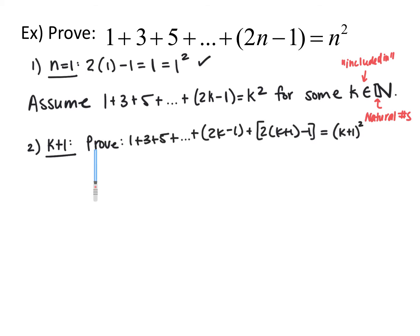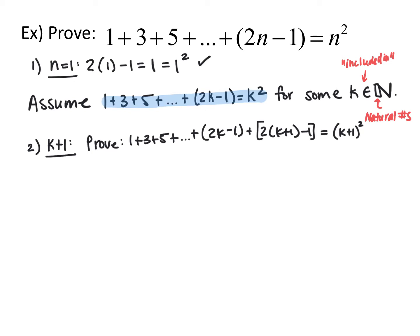We're going to prove that 1 plus 3 plus 5 plus so on plus 2k minus 1, plus the (k+1)th term — which is 2 times the quantity k plus 1, minus 1 — is equal to k plus 1 quantity squared. Here's where the assumption comes into play: we assumed that 1 plus 3 plus ... plus 2k minus 1 equals k squared, so we can replace that portion with k squared.